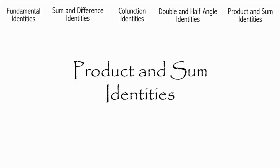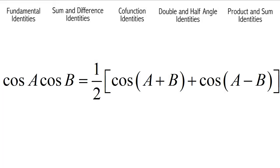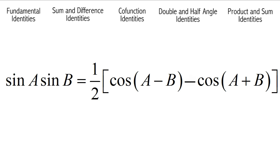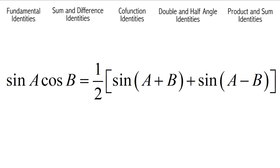Now we're going to do the product to sum and sum to product identities. Cosine of angle A times cosine of angle B is equal to one half of the quantity cosine of angle A plus B plus cosine of angle A minus B. Sine of A times sine of B is equal to one half of the quantity cosine of angle A minus B minus cosine of angle A plus B. Sine A times cosine B is equal to one half the quantity sine of angle A plus B plus sine of angle A minus B. Cosine of A times sine B is equal to one half of the quantity sine of angle A plus B minus sine of angle A minus B.